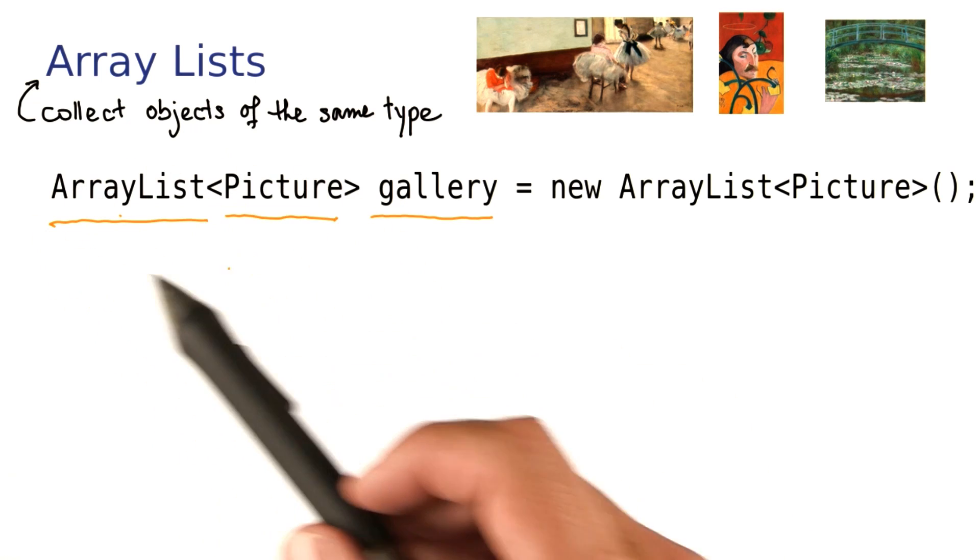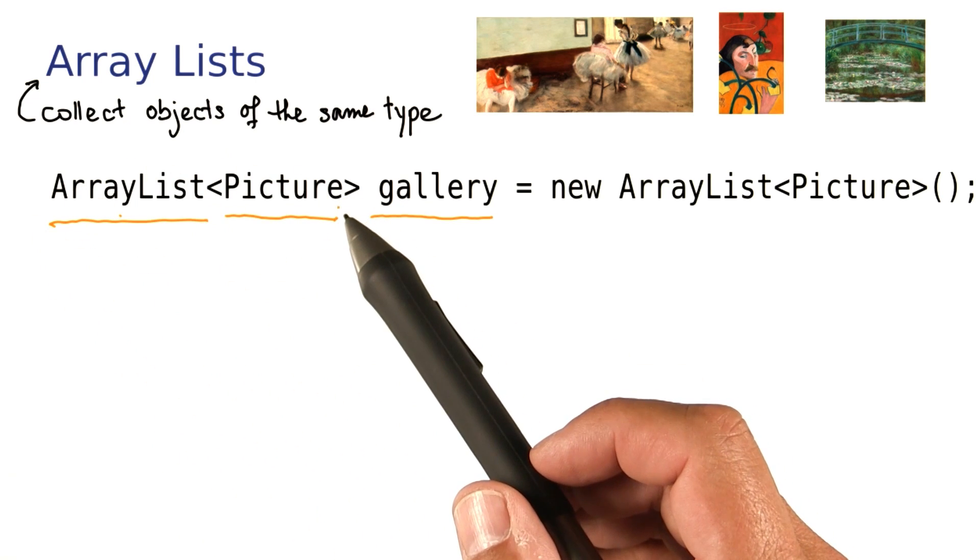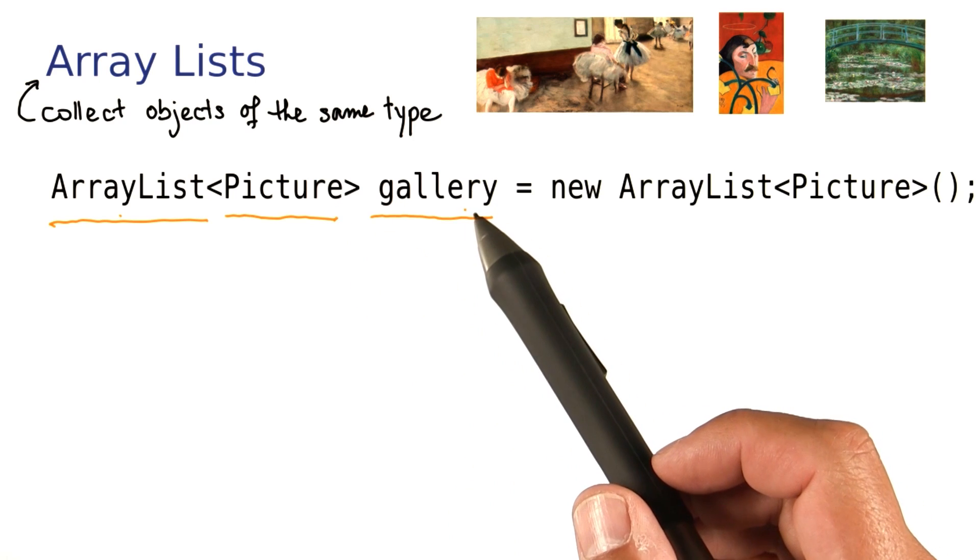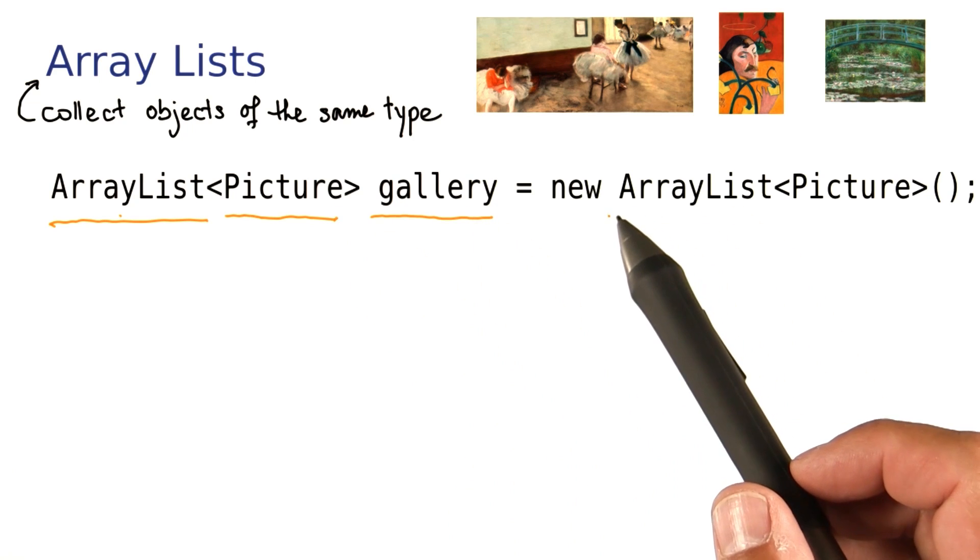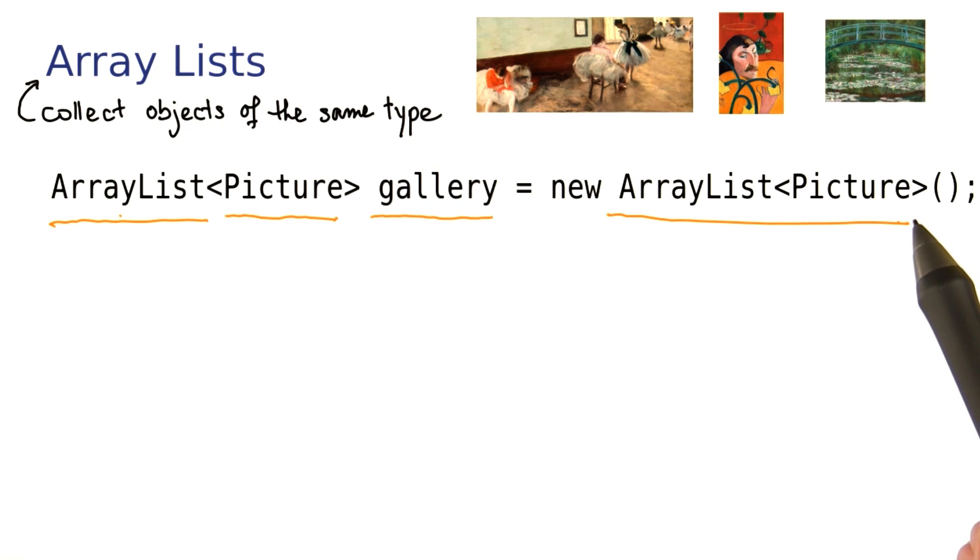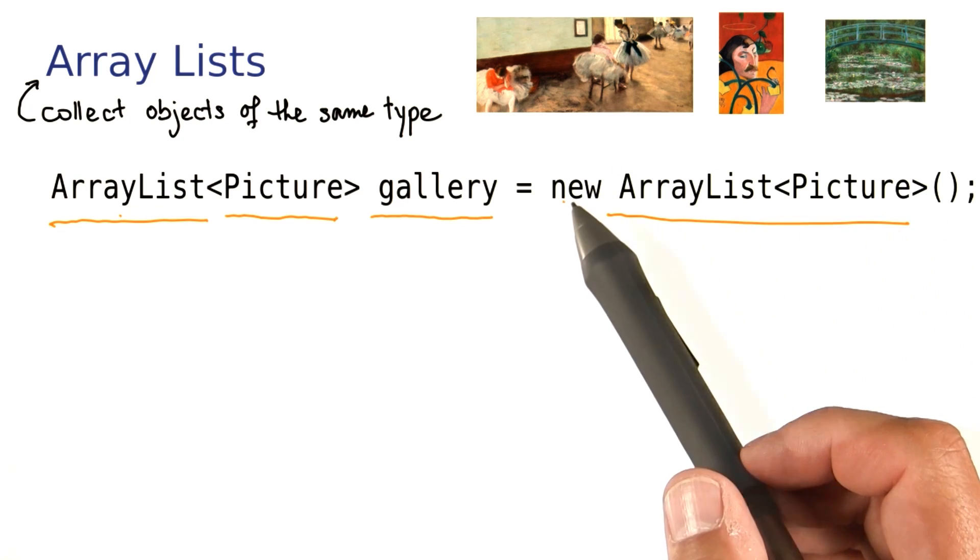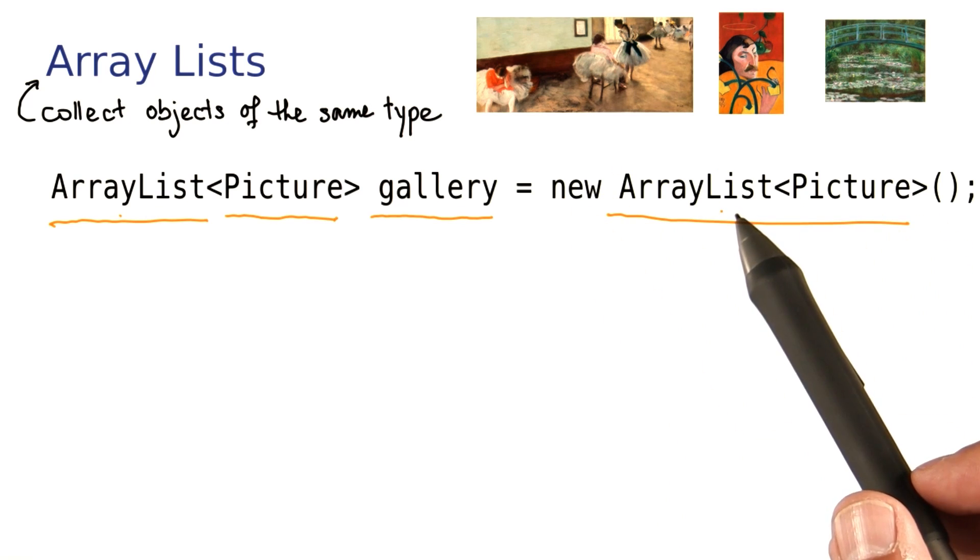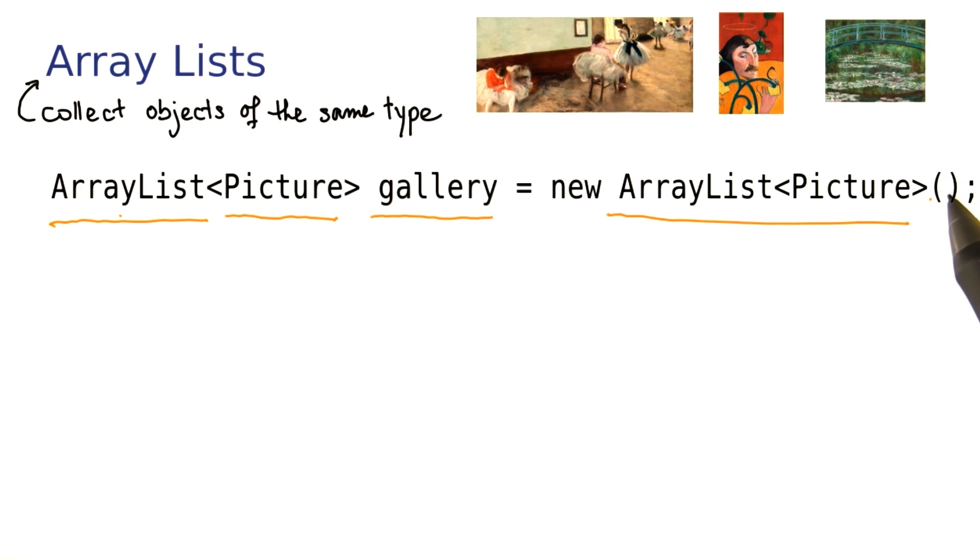So the whole thing here, ArrayList of picture, is the type of the gallery object. To the right, you simply have a constructor call. We again have the type, ArrayList of picture. We have the new operator, because we make a new object of the ArrayList type. And the parentheses here simply mean that we pass nothing to the constructor.